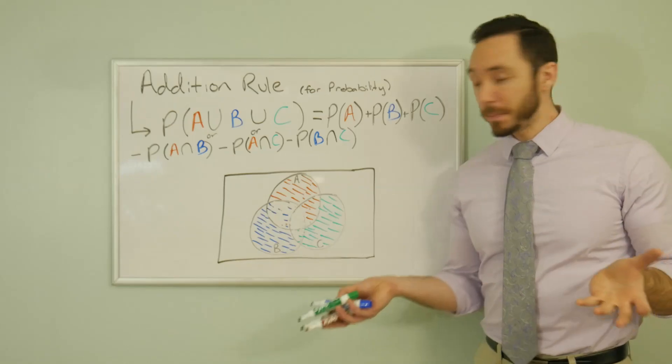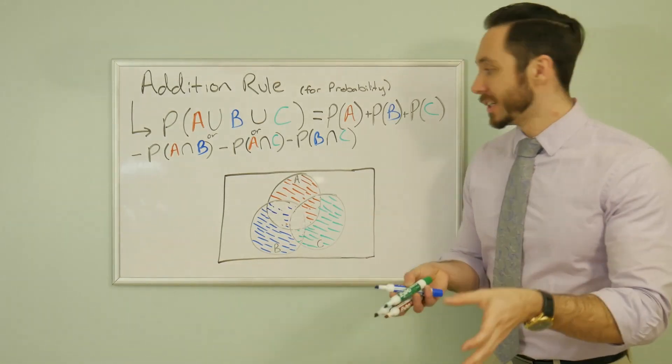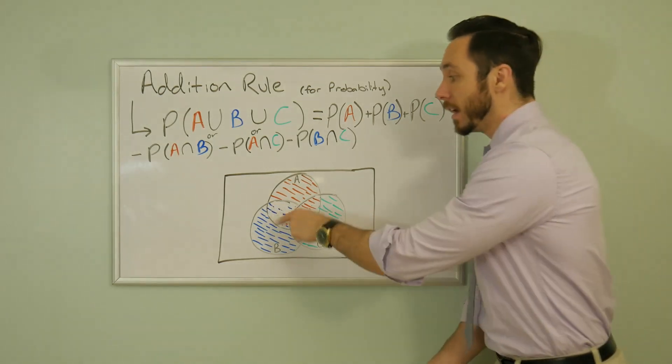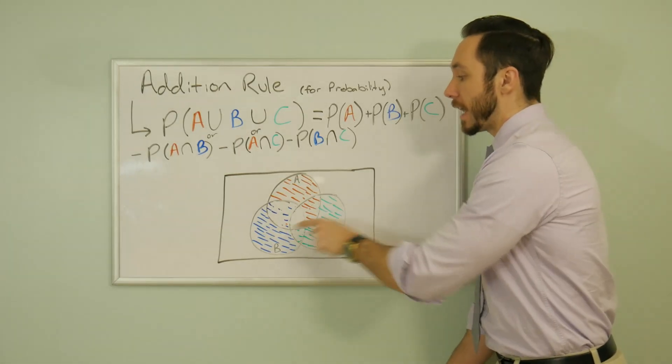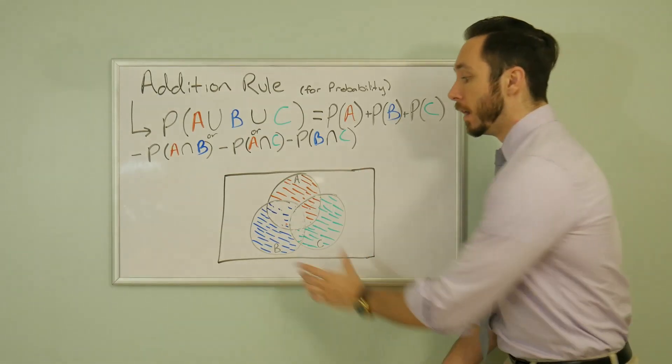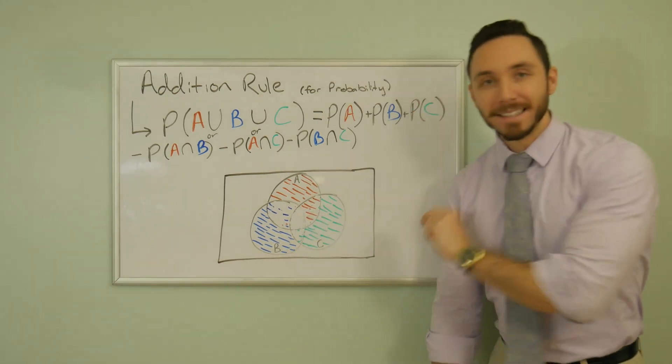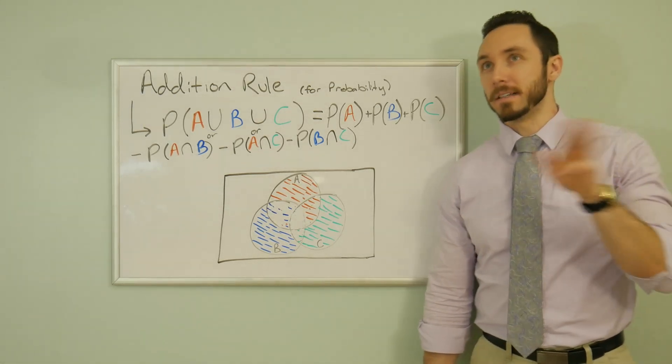We went eraser happy. And we erased a little too much. So we have this intersection of just A and B and not C. That's only shaded in once. Good to go. Same thing here. A and C, not B, shaded in once. Good to go. B and C, not A, shaded in once again. Good to go. But all three, the centerpiece has been erased too many times or three many times.